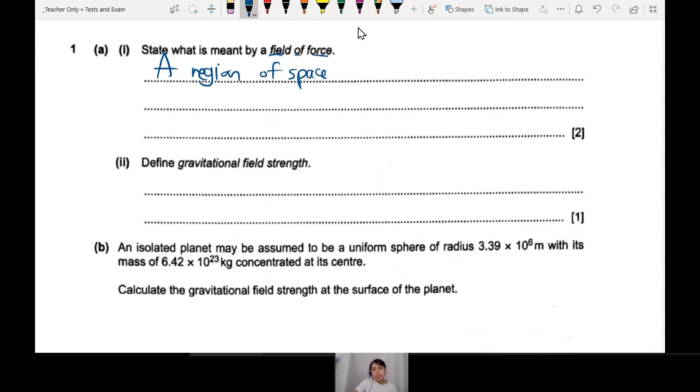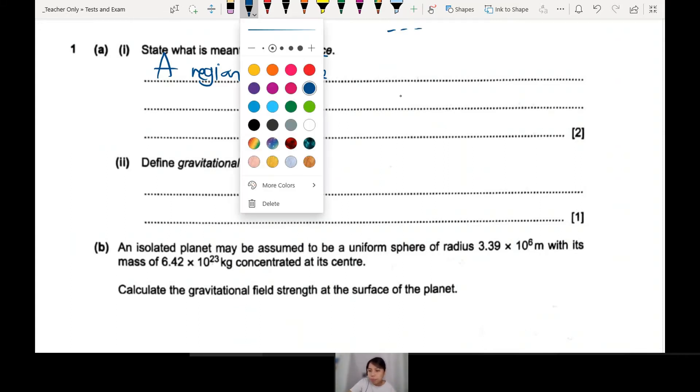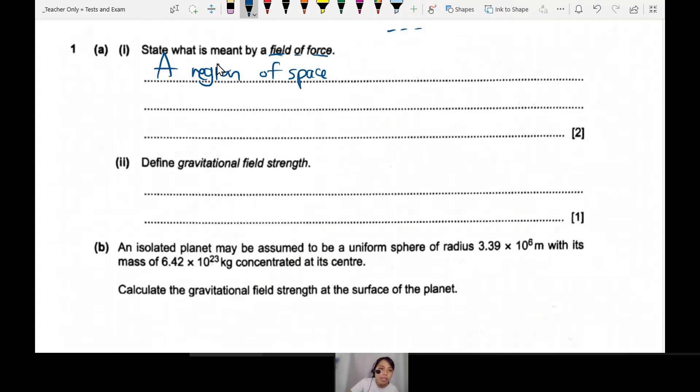Field of force - if you talk about a region of space, that's actually already one mark there. So a region of space that does what? Where there is a force acting on a particle, a mass or something like that. So we can write, for example, a region of space where a force can act on a particle.